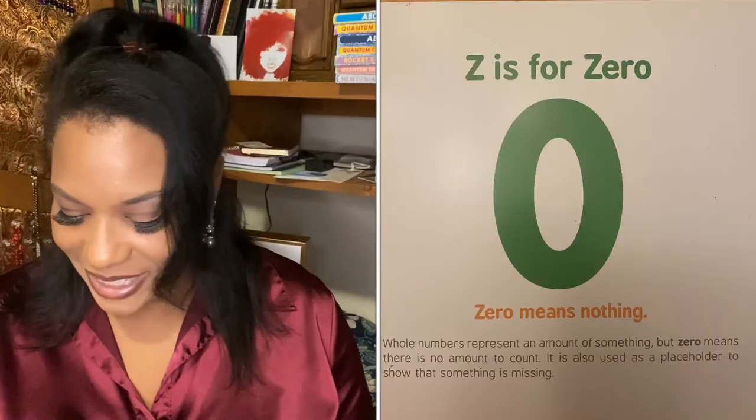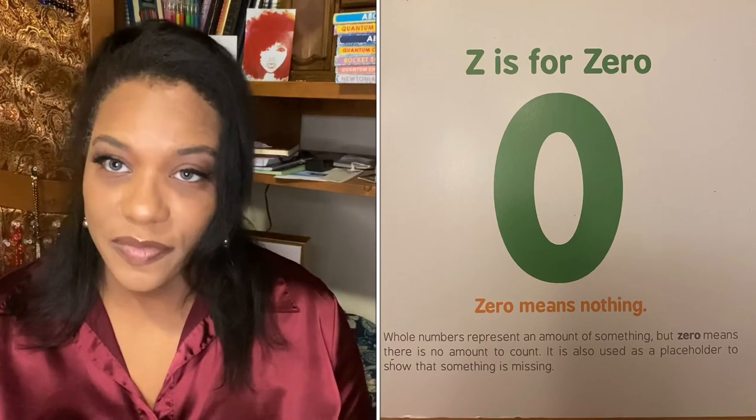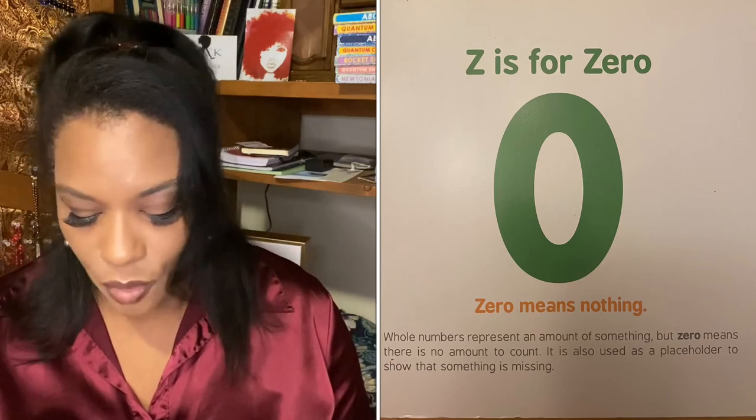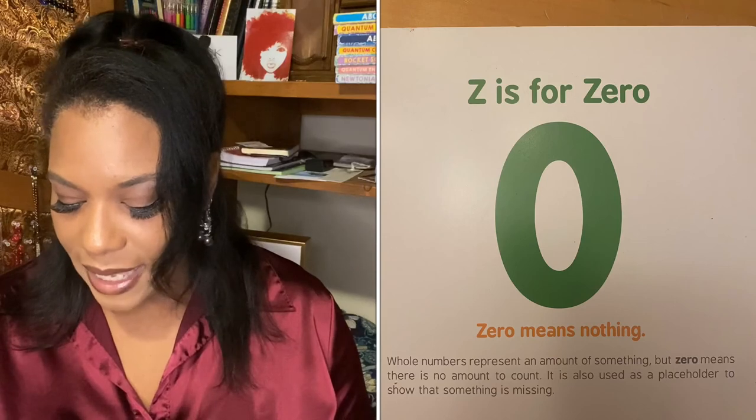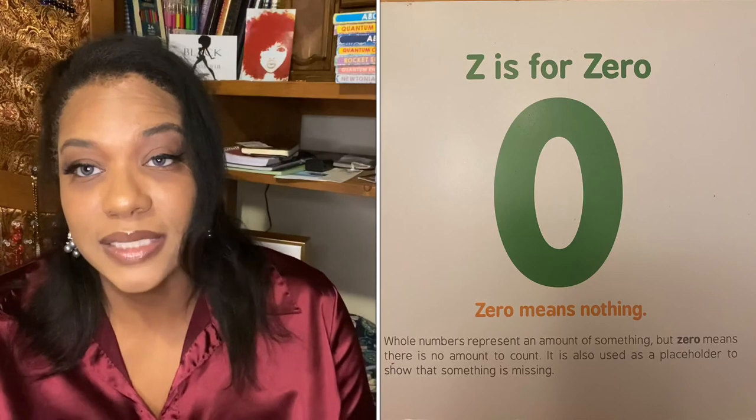Z is for zero. Zero means nothing. Whole numbers represent an amount of something, but zero means there is no amount to count. It is also used as a placeholder to show that something is missing.